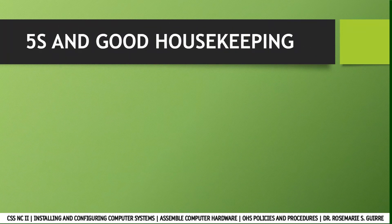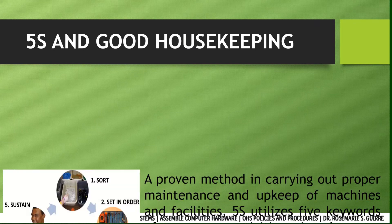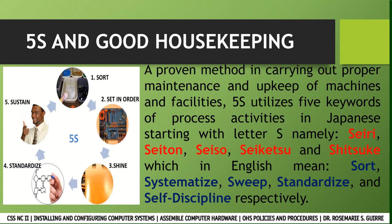The next topic is 5S and good housekeeping. The 5S is a proven method for carrying out proper maintenance and upkeep of machines and facilities. It utilizes five keywords from Japanese process activities, all starting with the letter S: Seiri, Seitan, Seiso, Seiketsu, and Shitsuke, which in English mean sort, systematize, sweep, standardize, and self-discipline respectively.